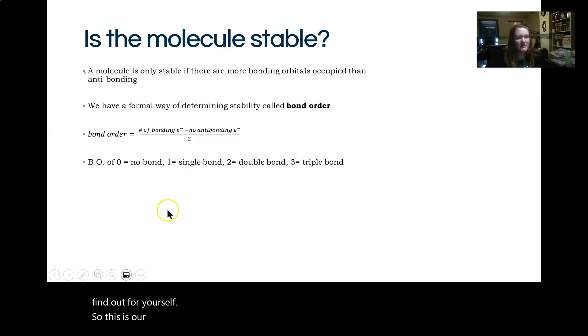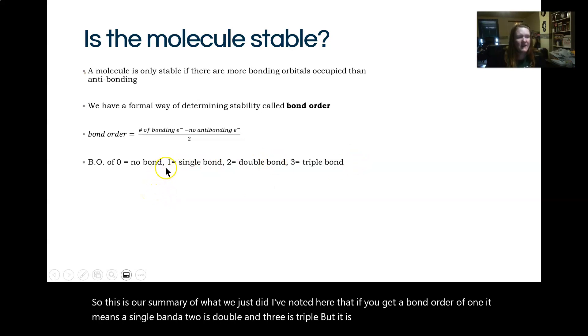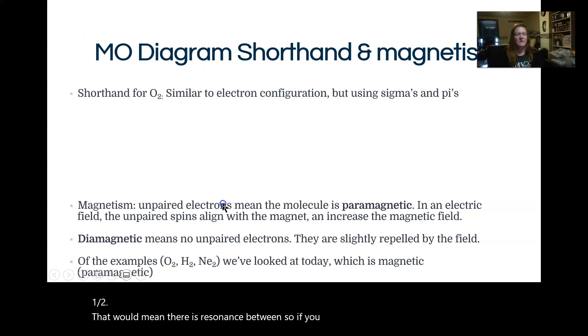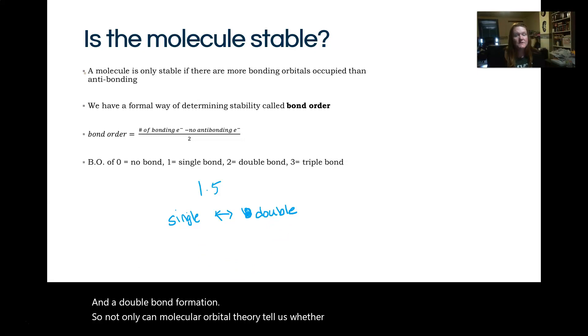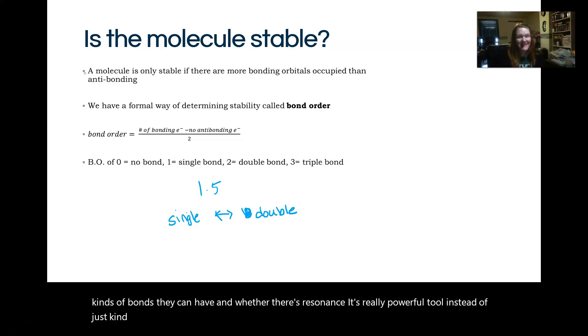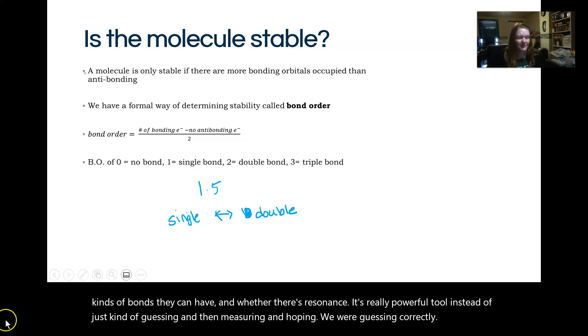So this is our summary of what we just did. I've noted here that if you get a bond order of 1 it means a single bond. A 2 is double and 3 is triple but it is also possible to get 1 1⁄2 or 2 1⁄2. That would mean there is resonance between a single bond and a double bond formation. So not only can molecular orbital theory tell us whether molecules exist it also tells us what kinds of bonds they can have and whether there's resonance. It's a really powerful tool instead of just kind of guessing and then measuring and hoping we were guessing correctly. Thank you.